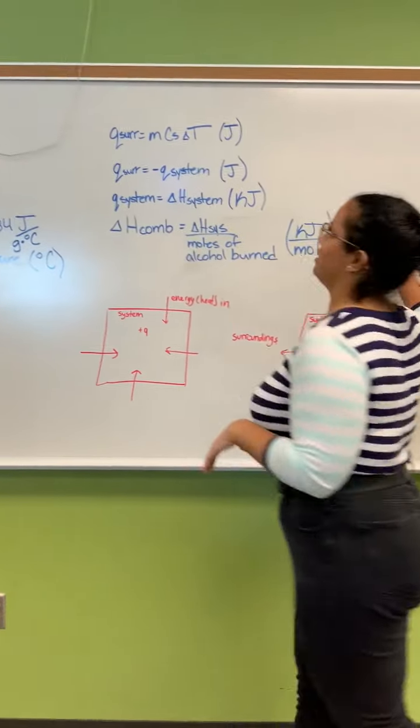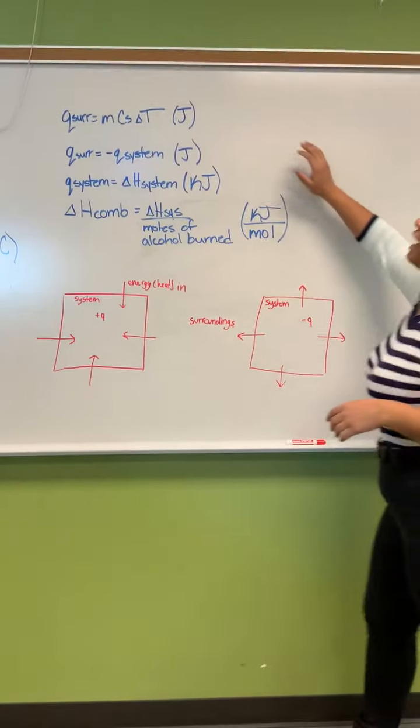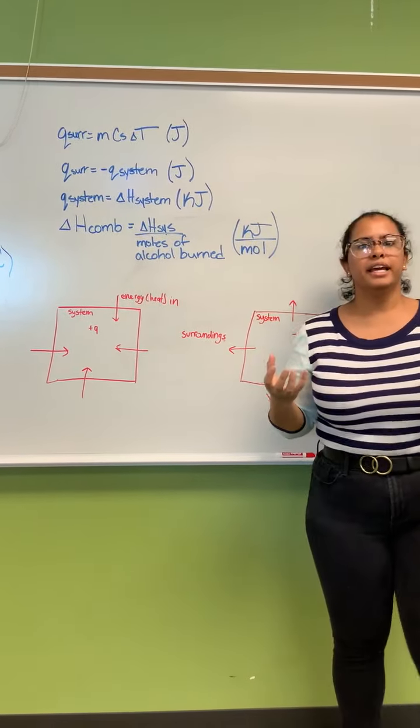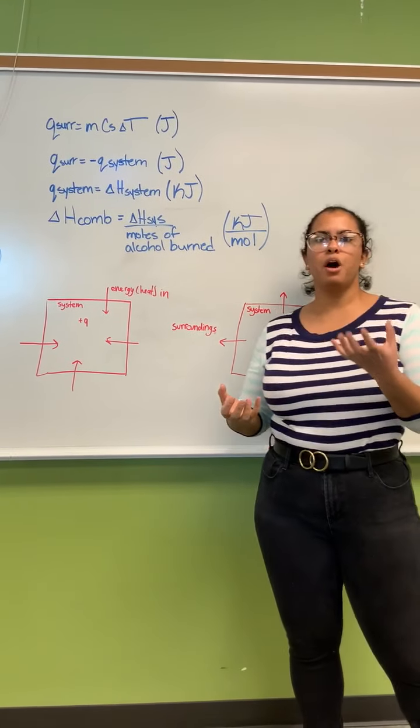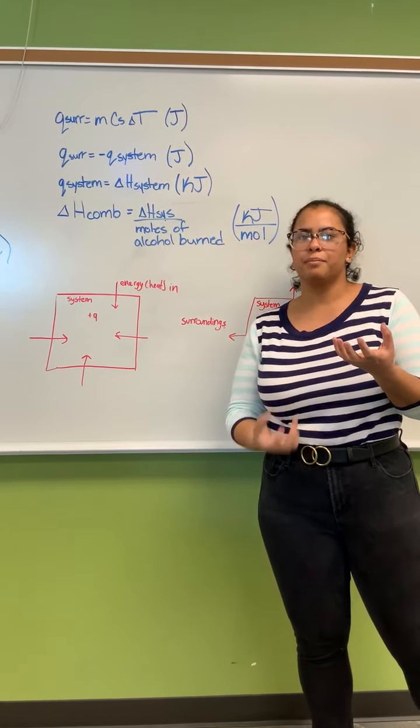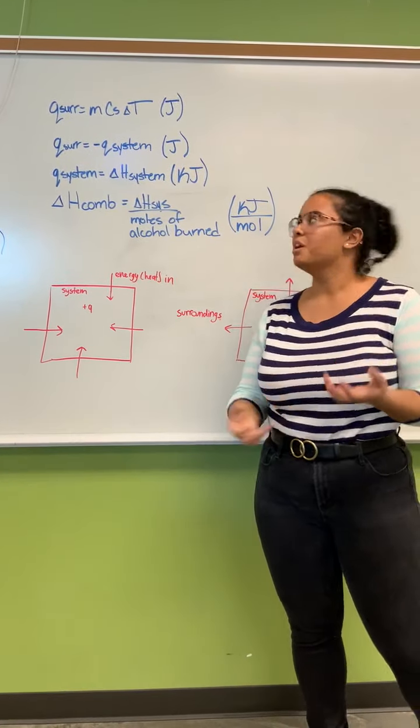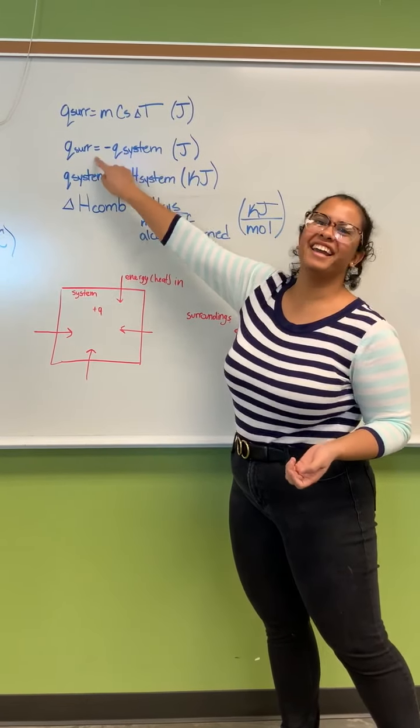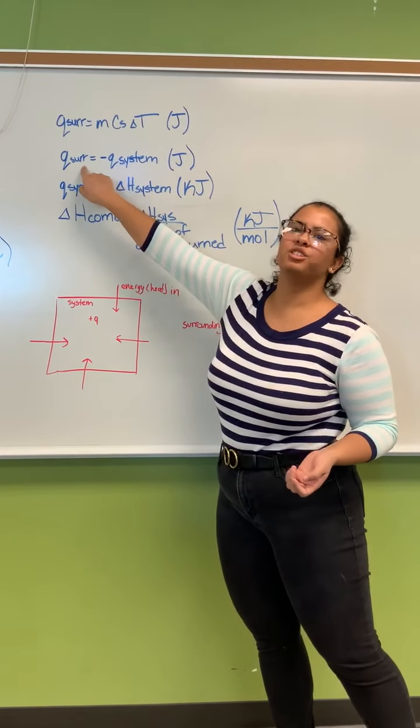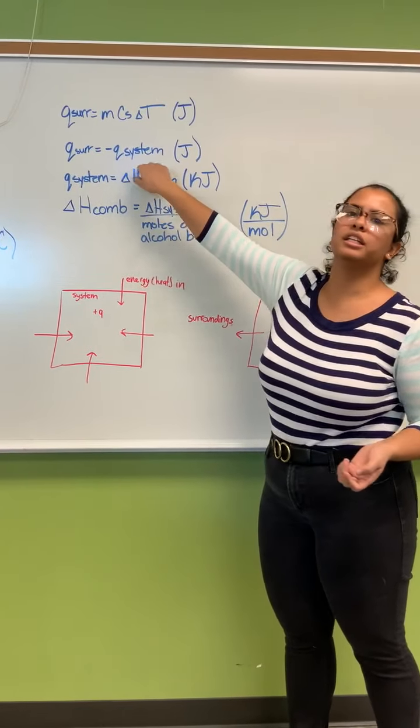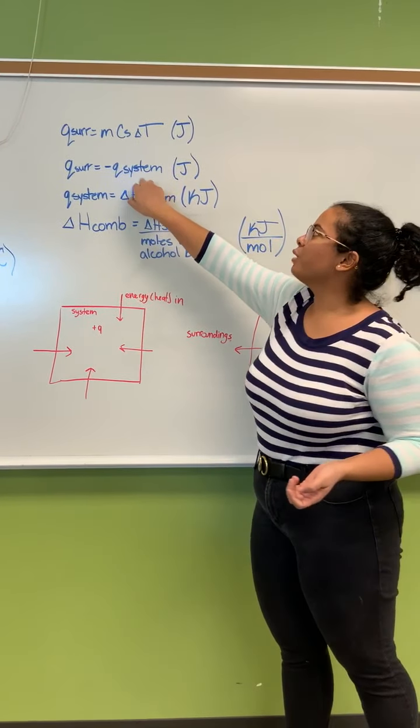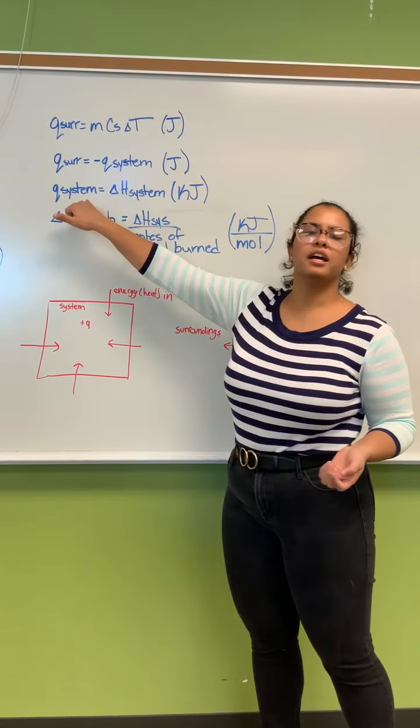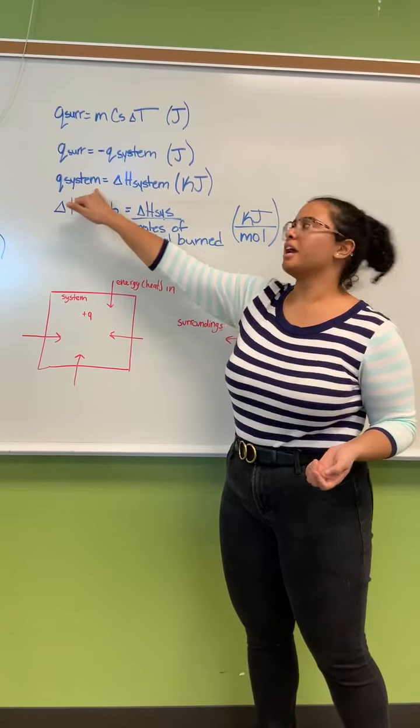So how do we relate this to our system? We have our q equals mcΔT for the water. Whatever heat absorbed by the water is whatever heat was released by the alcohol or the system. So the heat absorbed by the surroundings is the heat released by the system.